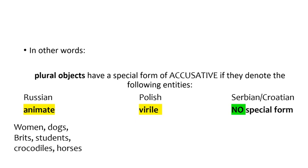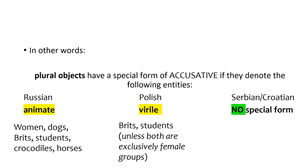In Polish, the special form of accusative is reserved for plural entities that contain at least one male human. So Brits, students, and professors will appear in the special form as long as the plural set includes at least one human male. This language does have exclusively feminine forms — think actor versus actress. If you wanted to put actresses in the accusative case in Polish, you have to use the non-virile form, and actresses share this form with books, crocodiles, and garden implements.